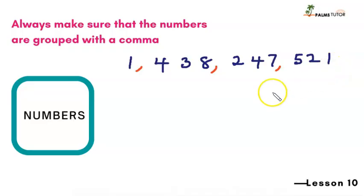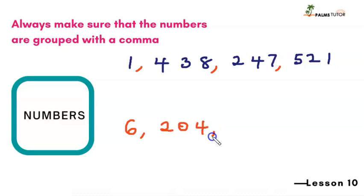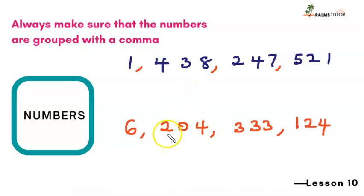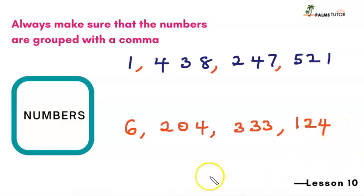Let's see this one now. We also have six billion — there's a comma here. We have 6,204,333,124. This is units/tens/hundreds; this is the thousands group; this is millions; and then billions. So: six billion, two hundred and four million, three hundred and thirty-three thousand, one hundred and twenty-four.